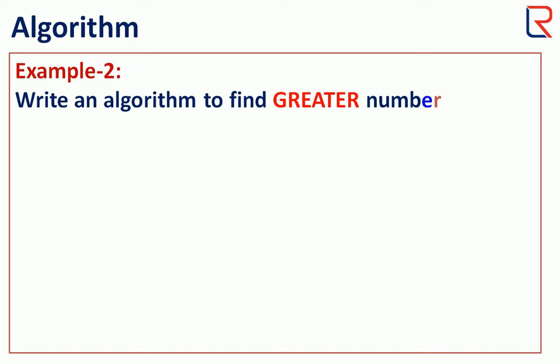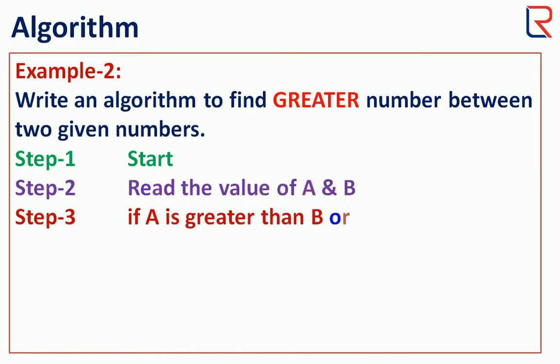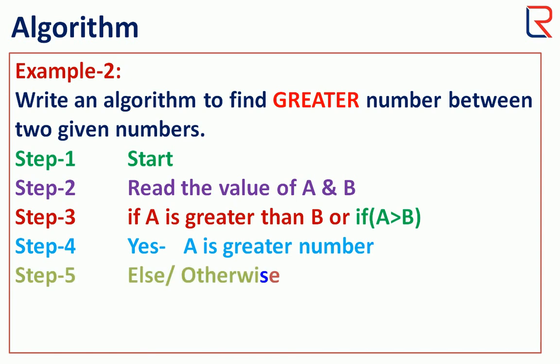The second example is to find the greater number between two numbers. So firstly start. Again we need two numbers, so read the value of A and B. Now it's time to check which one is greater. So the check is if A is greater than B. If the condition is true, then A is the greater number; otherwise, B is the greater number, and stop.